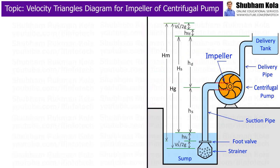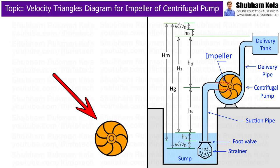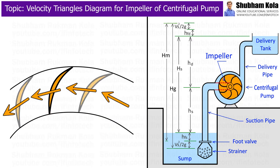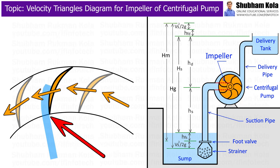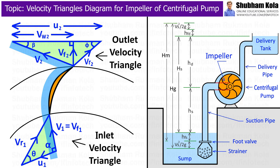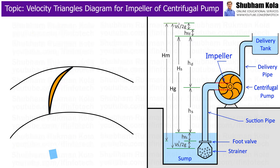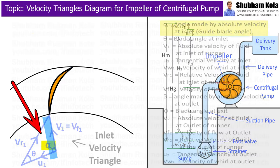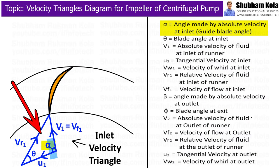The pump is a power-absorbing device in which work is done by the impeller on water. In a pump, water enters the impeller at its center and leaves at its outer periphery. Hence, inlet and outlet velocity triangles can be drawn as for an inward flow reaction turbine. Here, liquid enters the impeller vane radially, i.e., the guide blade angle at inlet, angle alpha, will be 90 degrees.